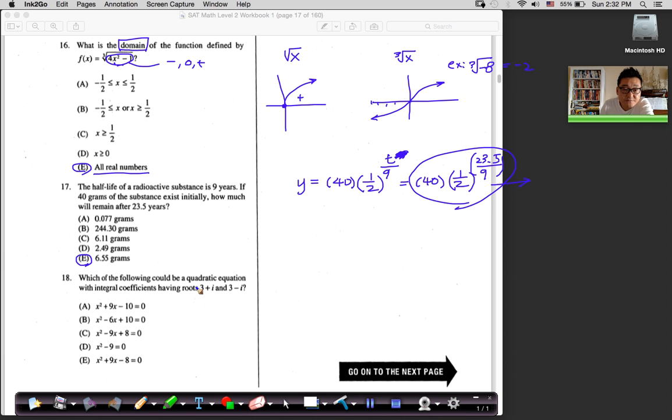Number 18, which of the following could be the quadratic equation? They want to know the equation when you have the integral coefficients having roots 3 plus i and 3 minus i. Remember earlier in the video, the different video that talked about the difference between roots and the factors. Yeah, so a lot of students make mistakes here. Now, 3 plus i came out as a root.